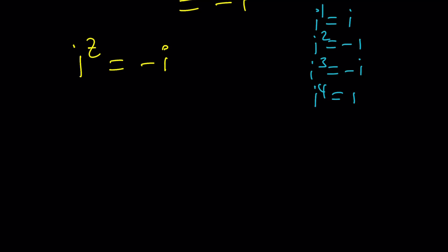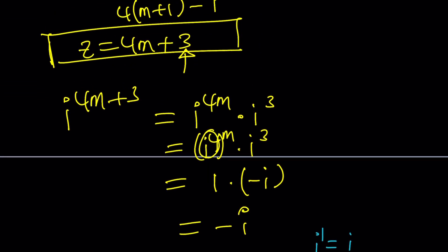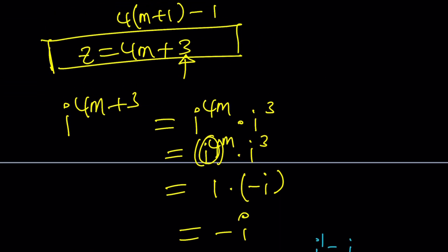But of course, z is not just going to be the third power. Because we can always multiply by a multiple of 4. Make sense? And in this case, z happens to be 4k plus 3 or 4m plus 3. It doesn't matter. The variable is, they just vary, right? So, it doesn't matter. You can vary it.